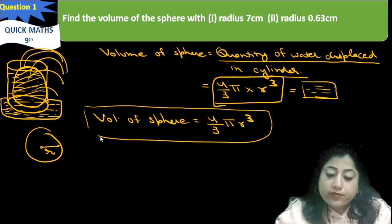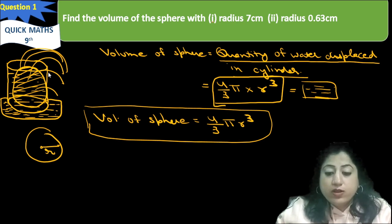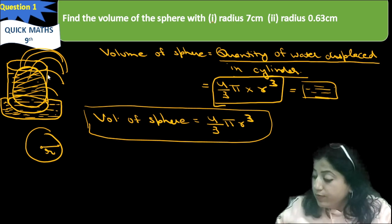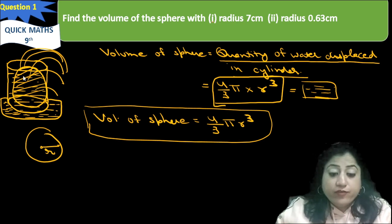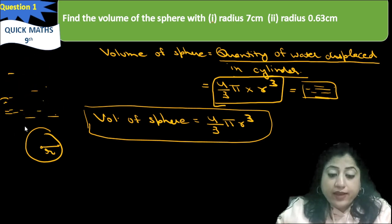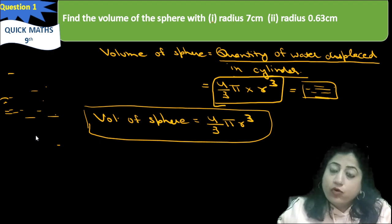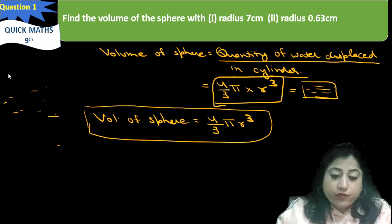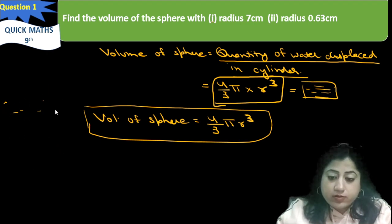So the formula for volume of a sphere is: Volume = 4/3 π r³. Now we will put different values of radius into this formula and calculate the volume of the sphere for each particular radius.